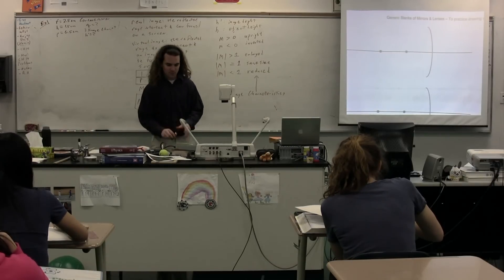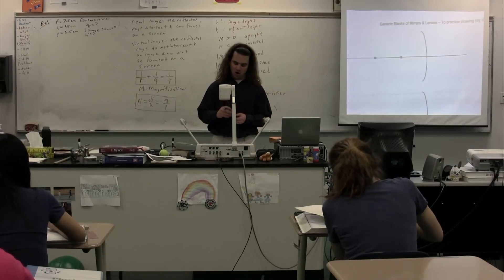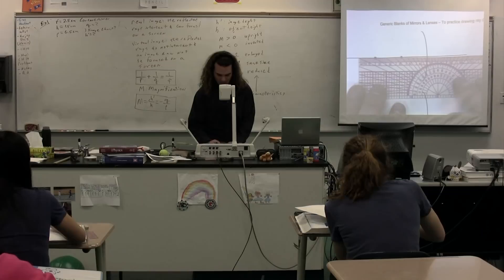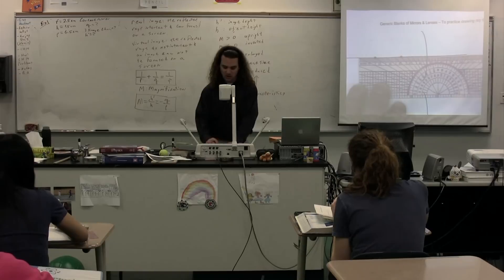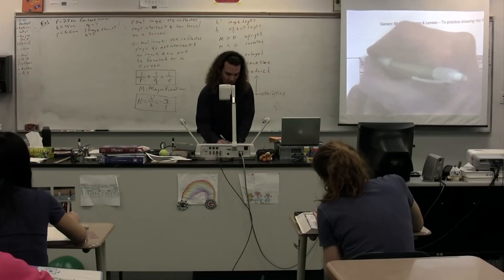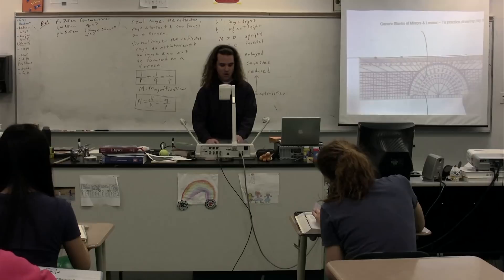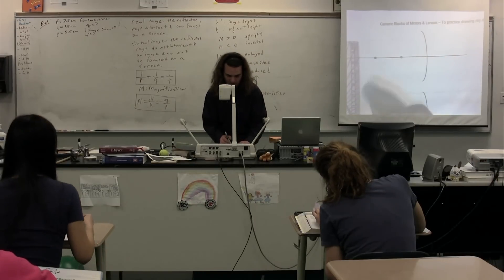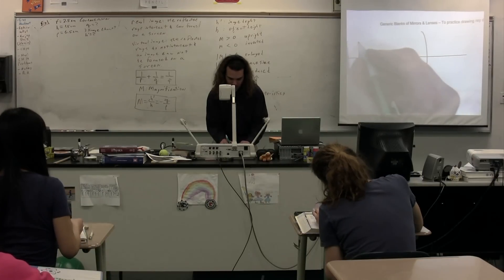We start out with the mirror. We take our ruler and we find a point 6.5 centimeters from the mirror along the principal axis and draw a point. On that particular point, we are then going to draw our object. Our object has a height of 1.5 centimeters, so we draw our vertical object 1.5 centimeters above the principal axis.